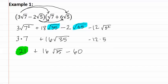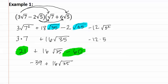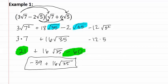We have twenty-one plus sixteen root thirty-five minus sixty. As you can see, we can now add both the first and the last terms together. Twenty-one minus sixty is negative thirty-nine plus sixteen root thirty-five. There is no more to combine, as the first term does not have a radical and the second one has a radical thirty-five. So this is our final answer.